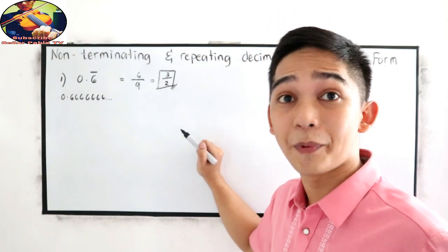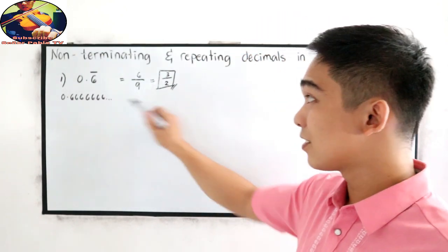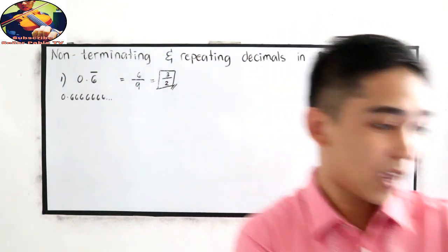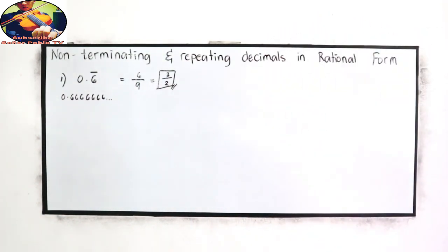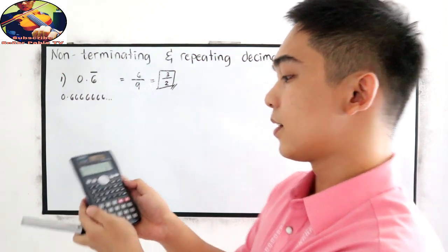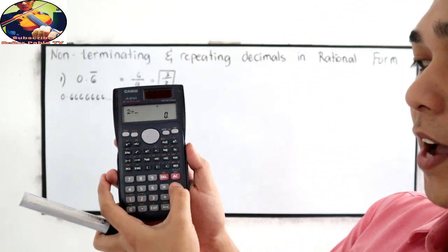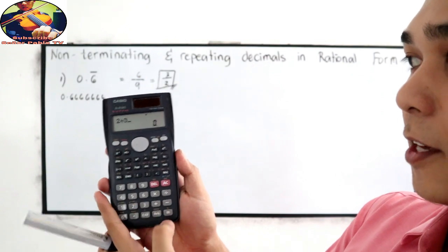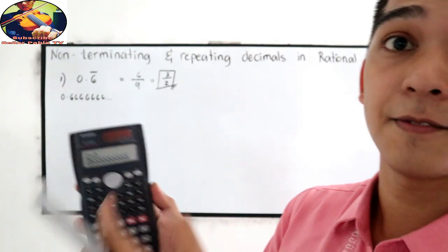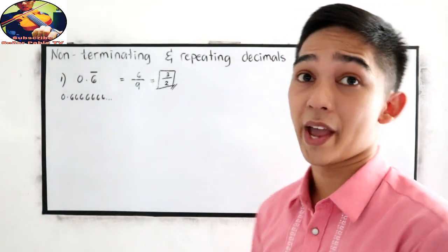2 over 3 — if you press it in your calculator, that is 0.666666. Let me show you using my calculator: 2 divided by 3 equals 0.66666666. So that means our answer is correct.